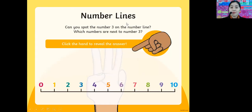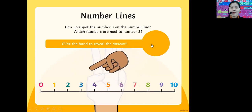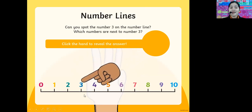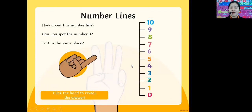We have here the number line. Zero, one, two, three, four, five, six, seven, eight, nine, ten. Can you click the hand to reveal the answer? Where is number three? Great job. That is the horizontal number line.